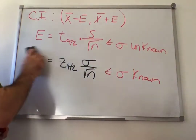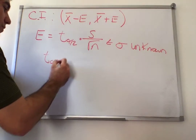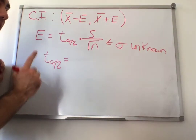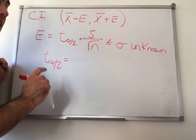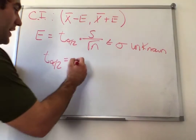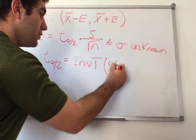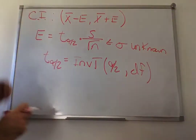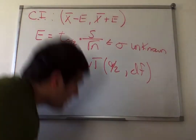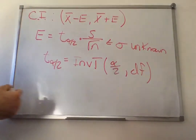How do we get t of alpha over 2? It's going to be equal to the inverse t function in your calculator — you may not have this depending on your calculator's software version. It's: inverse t of alpha over 2, comma, degrees of freedom. Using inverse t with alpha over 2 will give you a negative number, but we're going to ignore the negative and just take the positive form to plug into our formula.